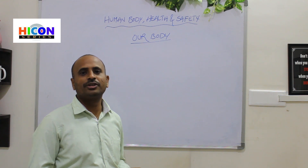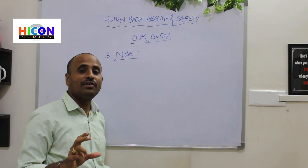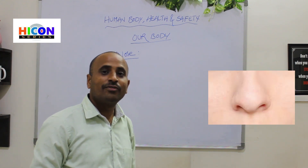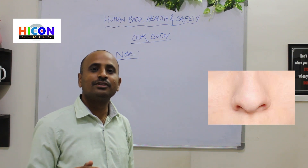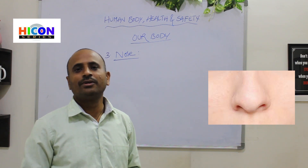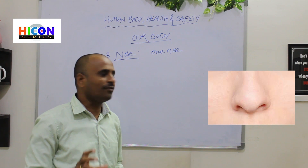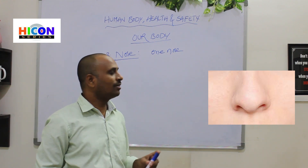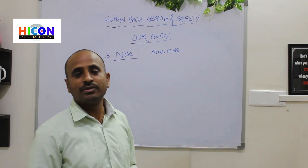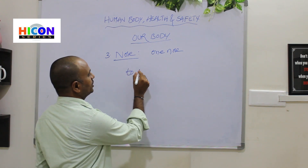Now we are going to discuss about the third part — nose. What is the function of nose? Look at the picture, children. In the picture, it is nose. Where is it located in our body? The nose is located in our head. How many noses do we have? We have only one nose. What is the function of the nose? The function of the nose is to breathe. We can breathe with our nose.